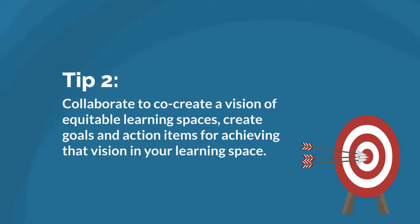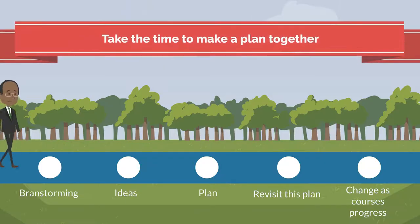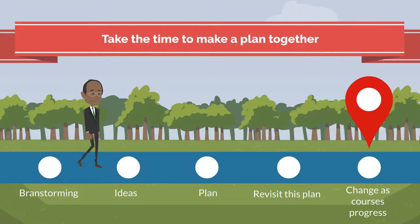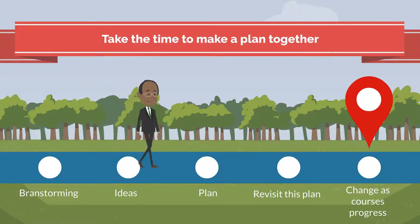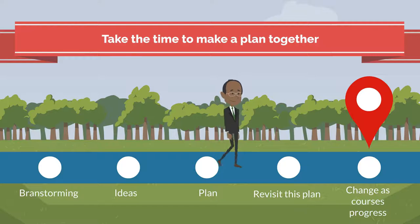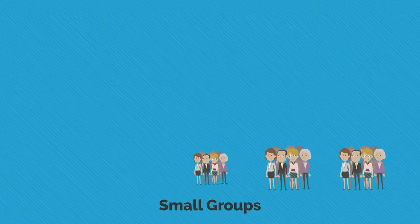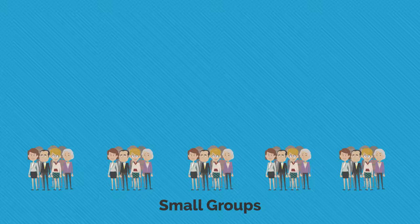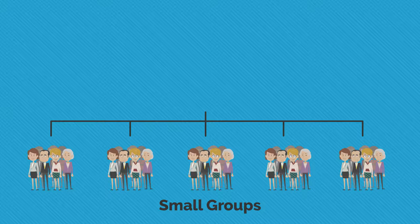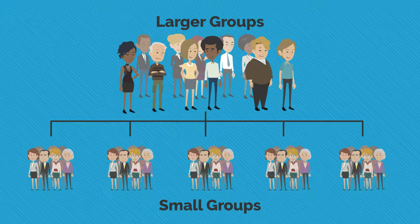Tip 2: be clear about your intention to work together to co-create an equitable learning environment. Take the time to discuss what that means and plan together how you are going to achieve that. Revisit the plan as needed, as expectations and needs may and often do change as courses progress. One simple strategy to tackle this is to create small groups where people can brainstorm their ideas, report back to the larger group, and then as a class walk through the lists and work to build some consensus on what is important for your space.